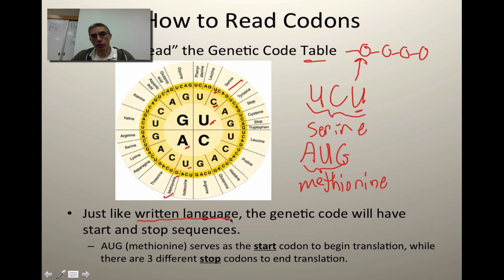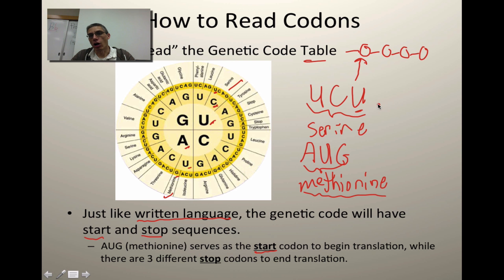This is very similar to what we would consider a written language, and the important thing about a written language is that sometimes you do have what we consider start and stop sequences — the cell needs to know when to start coding and when to stop coding. This methionine is considered what we call the start codon. When you have your messenger RNA strand with all of those nitrogen bases lined up, the very first one is going to be AUG, and this is going to tell the cell to start decoding that sequence — helping to decide which amino acids need to be brought together to produce our protein.